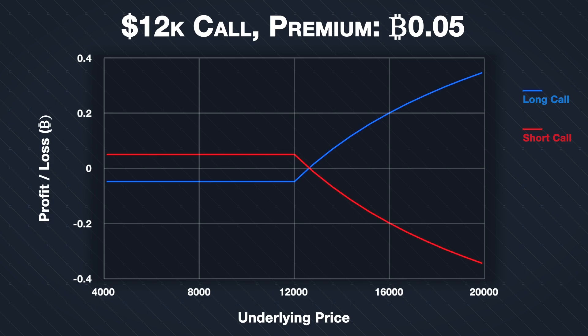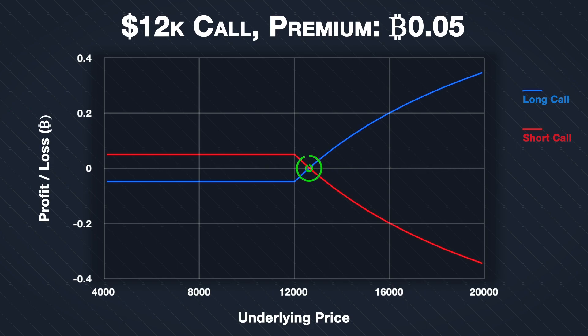At each level of underlying price, the P&L lines for buyer and seller are an equal distance away from the x-axis, but on opposite sides — one positive and one negative. Where each line crosses the x-axis represents the break-even point, i.e. the point at which zero dollars profit or loss is made. The buyer and seller of the option share the same break-even point as well, ignoring any trading fees. As we calculated in the previous lecture, the break-even point is $12,631.58.